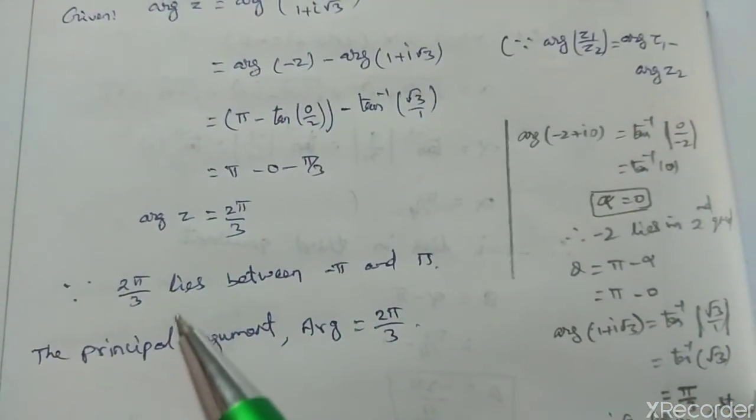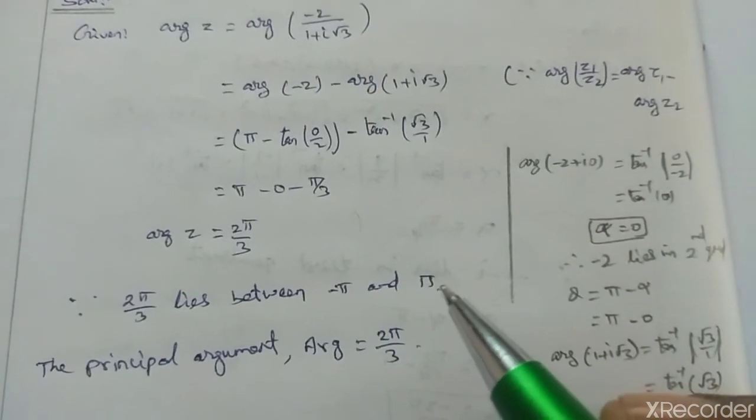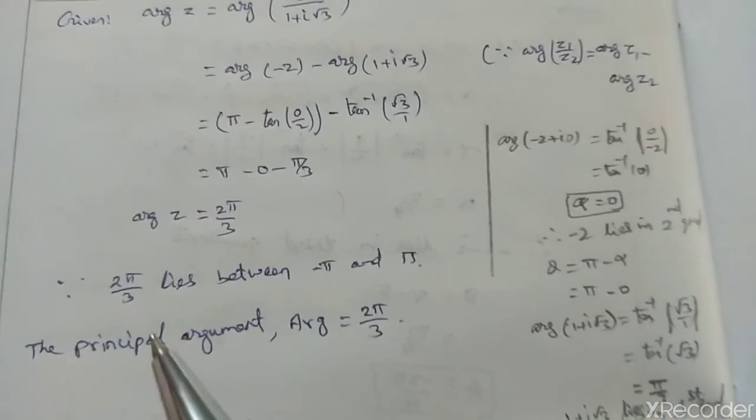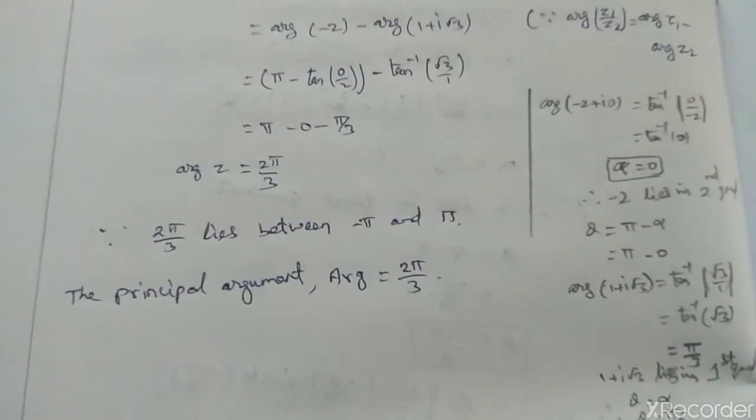Since 2 pi by 3 lies between minus pi and plus pi, therefore the principle argument is 2 pi by 3.